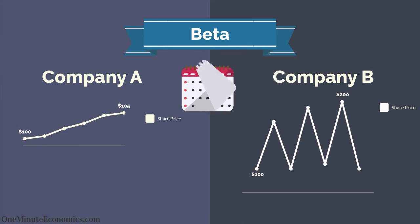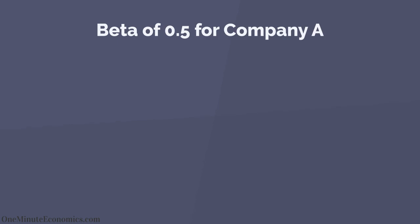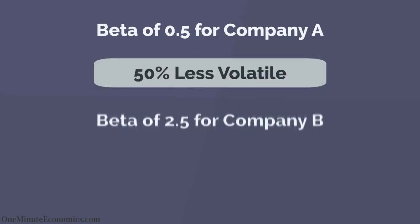A beta of 0.5 for Company A tells us its shares are 50% less volatile than the average, whereas a beta of 2.5 for Company B tells us its shares are 2.5 times more volatile than the benchmark.